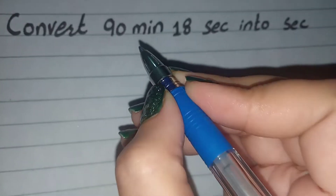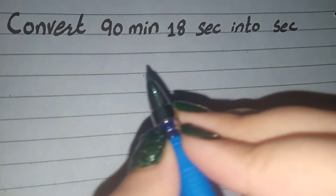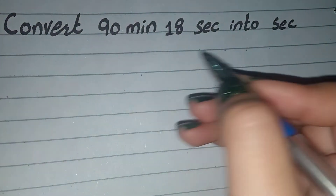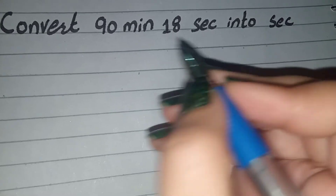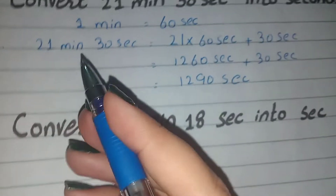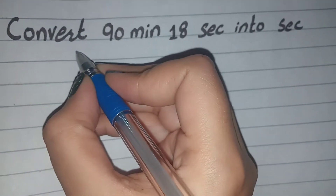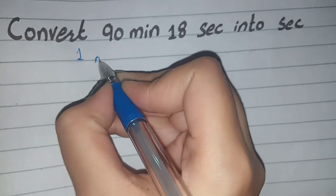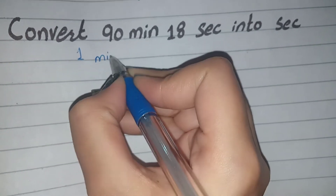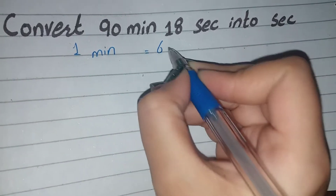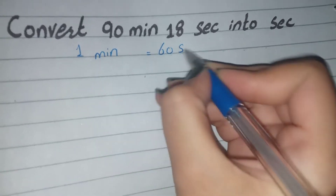We have to find 90 minutes in seconds. One minute equals how many seconds? We know one minute equals 60 seconds. We have to write it in short form.